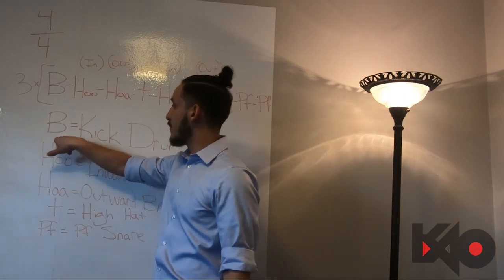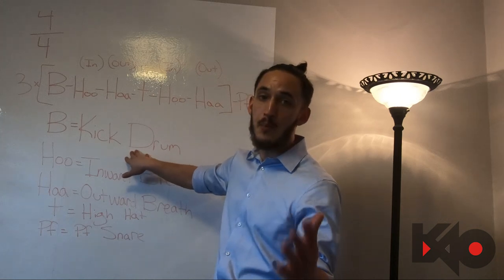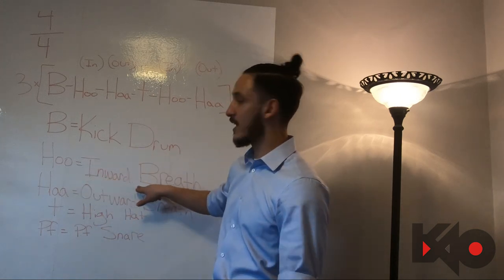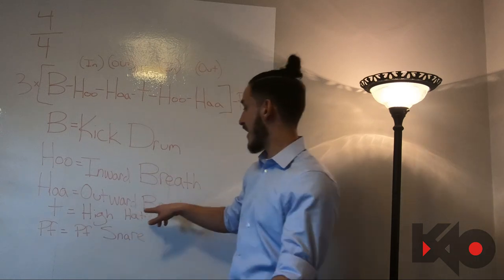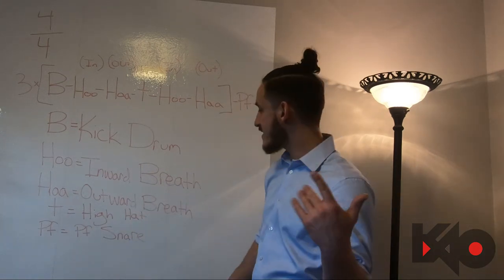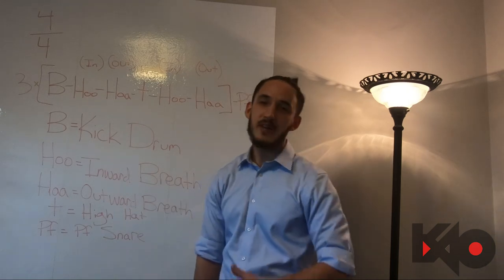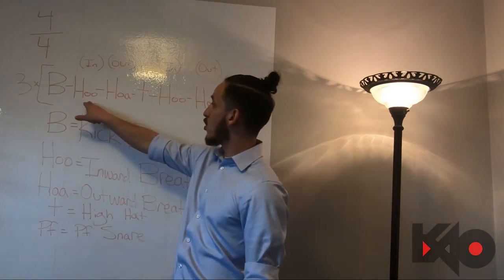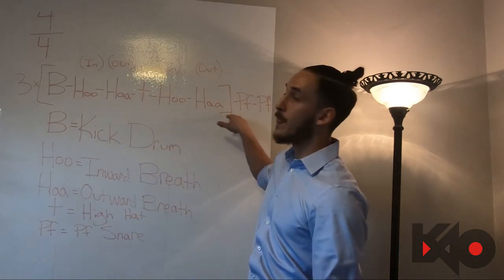So we've got the B, we've got the kick drum, we've got the hoo which is the inward breath, we've got the ha which is an outward breath, we've got T hi-hat, and we've got the PF for the PF snare. That's the B hoo-ha, T hoo-ha.